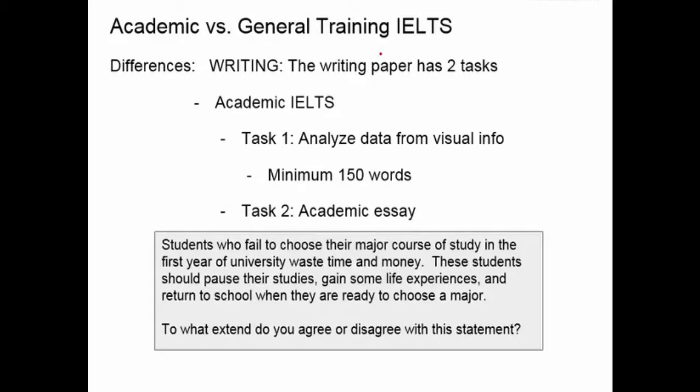For task two, you'll write an academic essay related to an academic topic. This essay will be academic, at least four paragraphs long, with an introduction and conclusion. In our writing lessons, we will go over in detail how to respond to these kinds of prompts for task two.